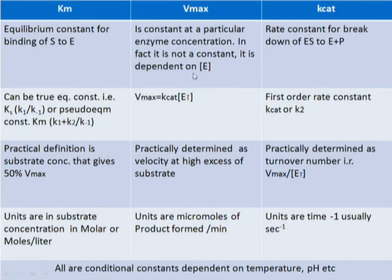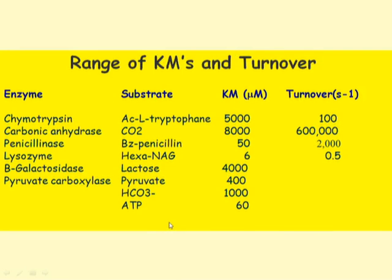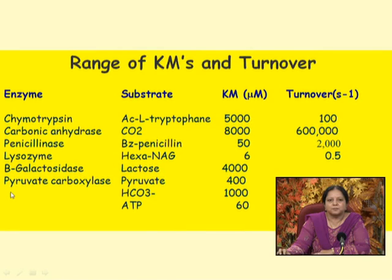Km, Vmax, and Kcat are all conditional constants — not absolute constants like those in physics. They depend on temperature, pH, and various other assay conditions. This table gives the range of Km and turnover numbers for different enzymes. For enzymes with more than one substrate, each substrate may have a different Km value.